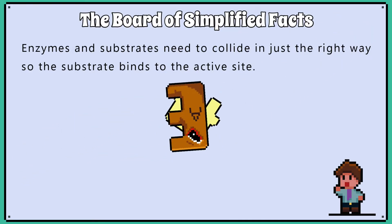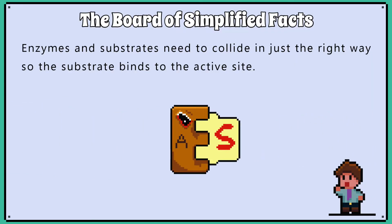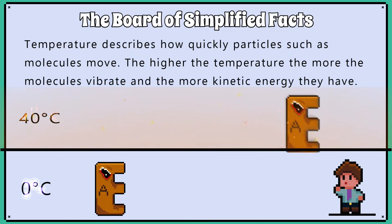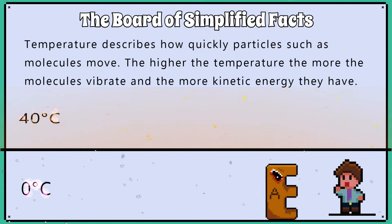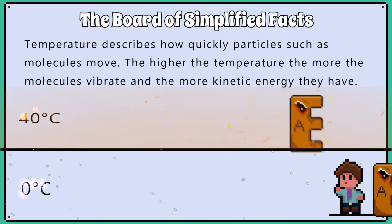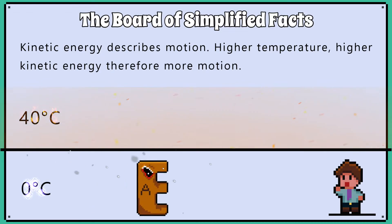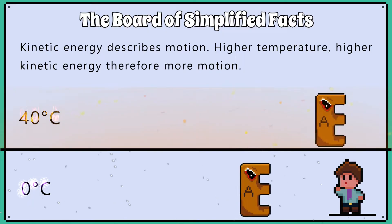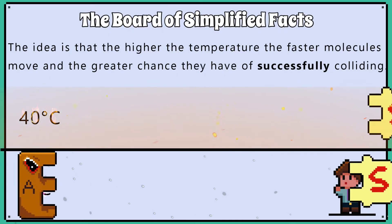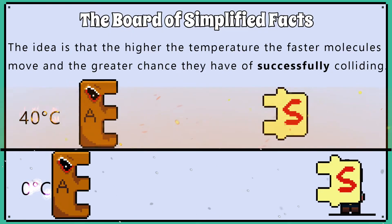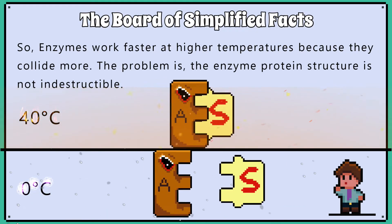Enzymes and substrates need to collide in just the right way so the substrate binds to the active site. Temperature describes how quickly particles, such as molecules, move. The higher the temperature, the more the molecules vibrate and the more kinetic energy they have. Kinetic energy describes motion in this case — higher temperature means higher kinetic energy and therefore more motion. The idea is that the higher the temperature, the faster molecules move and the greater chance they have of colliding, so enzymes work faster at higher temperatures because they collide more.